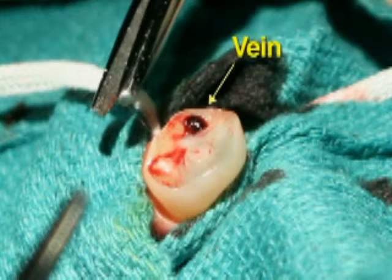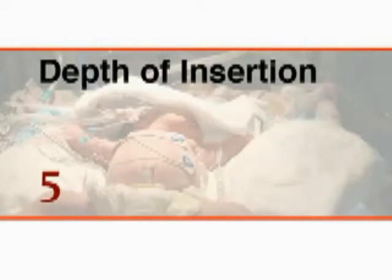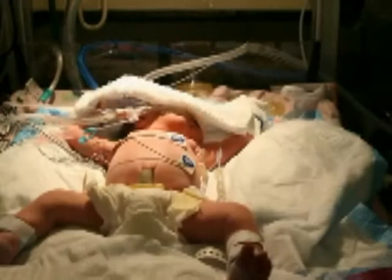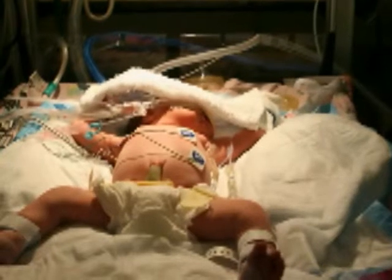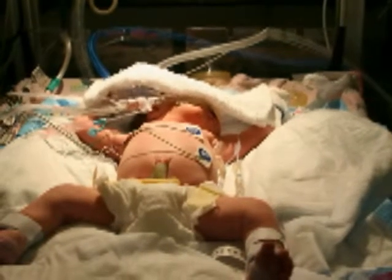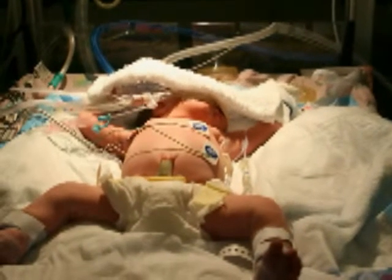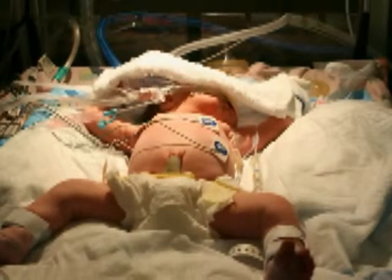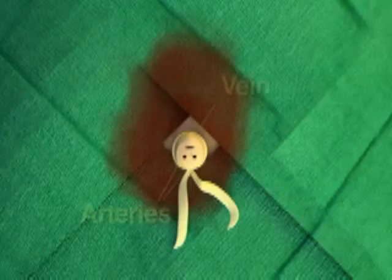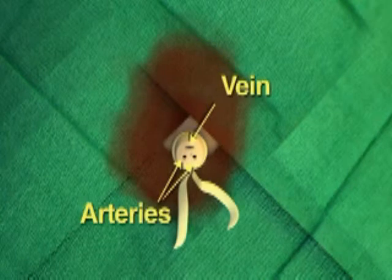In a full-term infant, the umbilical vein is 2 to 3 centimeters in length and 4 to 5 millimeters in diameter. After the procedure has been explained and consent obtained from the parent or parents, review the records and examine the patient to confirm that there are no contraindications to catheterization. In your examination, concentrate on the anatomic landmarks.